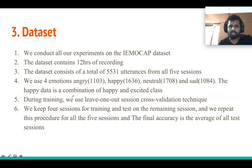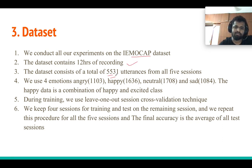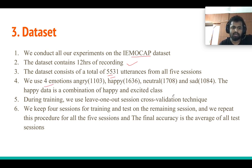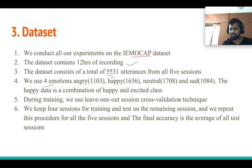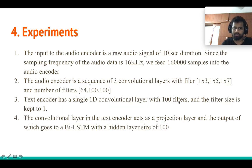For the dataset, we use the IEMOCAP dataset, which contains 12 hours of recordings with about 5,000 sentences. We use four emotion categories: happy, angry, neutral, and sad. We apply a leave-one-session-out cross-validation technique — using four sessions for training and one for testing — and repeat this for all sessions, averaging accuracy across all test sessions.